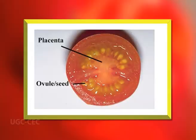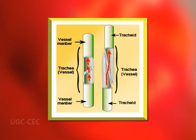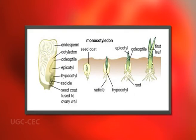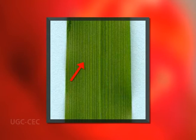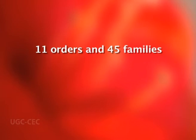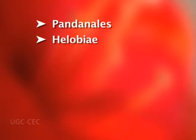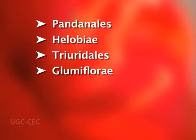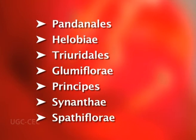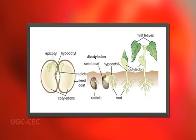The subdivision Angiospermia is based on the characters that ovules are enclosed in the ovary and tracheae or true vessels are present. It is divided into two classes: Monocotyledony and Dicotyledony. The class Monocotyledony is characterized by a single cotyledon, leaves with parallel venation, trimerous flowers, and closed vascular bundles. It includes 11 orders and 45 families. The 11 orders are: Pandanales, Helobiae, Triuridales, Glumiflorae, Principes, Synanthae, Spathiflorae, Farinose, Liliiflorae, Scitamineae, and Microspermae.